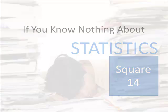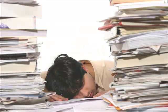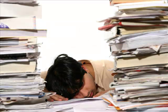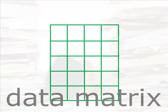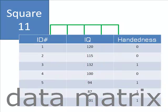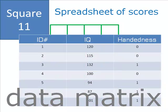If left unattended, data would cover the desks of researchers and gather dust. To be useful, it must be organized into a data matrix, a row-column table of scores. In square 11, you made a spreadsheet of scores. Each row is a person, and each column is a variable.